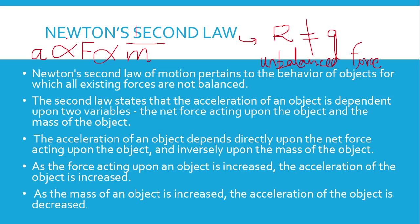Putting this into equation form: a equals some constant k times F, and a equals some constant divided by m. Combining these relationships, we get that F equals ma, or equivalently a equals F divided by m. This is the mathematical expression of Newton's second law.